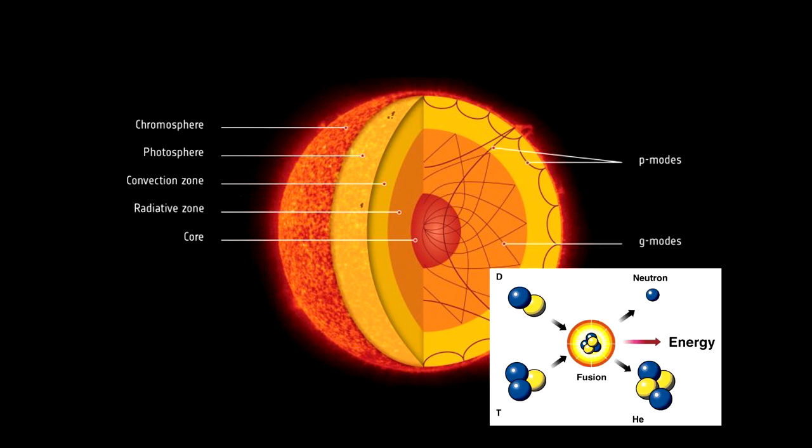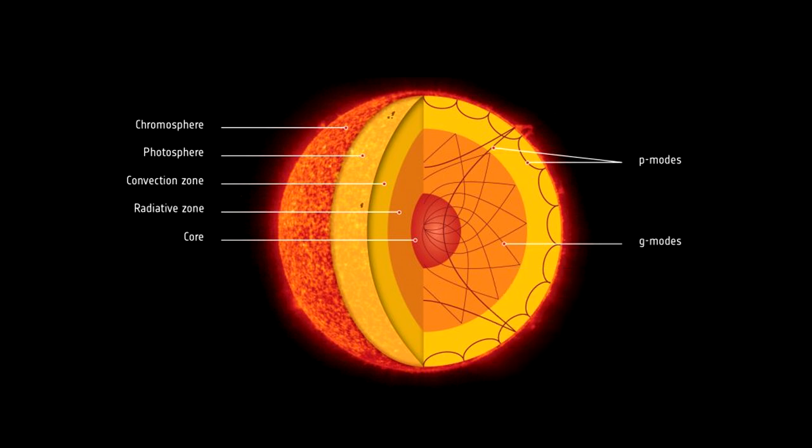Surrounding the core is the radiative zone, where energy is transported outward by photons. This process can take millions of years due to the dense plasma in this region.